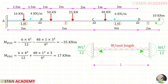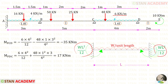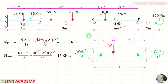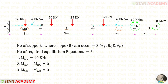Now let us find the fixed end moments in the span CD. In span CD we have a point load and a uniformly distributed load. First, let us take the UDL — here W is 6 and L is 4. Now let us take the eccentric point load — here W is 48, A is 1, B is 3, and L is 4. After adding these two results, we will get M_CD, and after adding the other two, we will get M_DC.